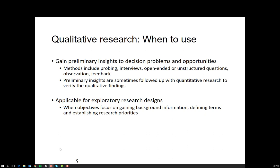So when do we use qualitative research? Qualitative is best used in exploratory designs or when you're just trying to gain preliminary insights. Some of the work done in your secondary data is also considered qualitative research. In conducting your literature review and reviewing secondary sources, as long as that data is the words written in those sources, it's considered qualitative research. We use secondary qualitative sources to help us define our decision problems and opportunities.